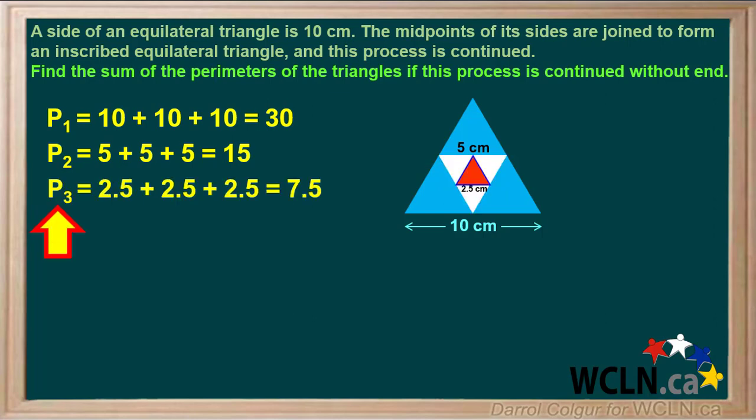And each side of the third triangle, the red one, will be half of 5, or 2.5. So the perimeter of this third triangle, which we'll call P3, will be 2.5 plus 2.5 plus 2.5, or 7.5.